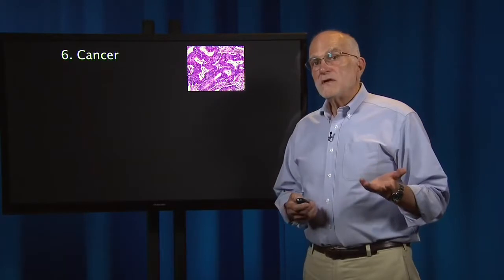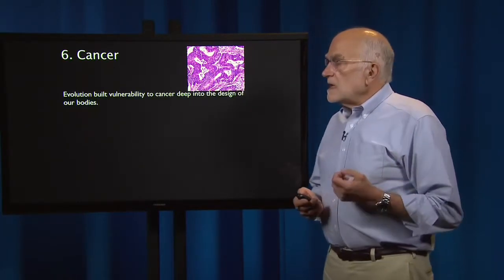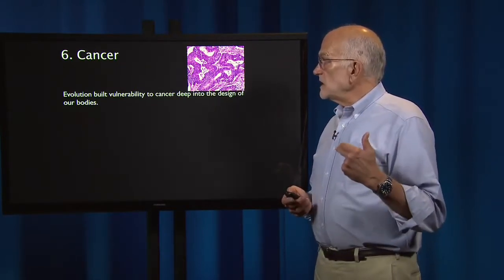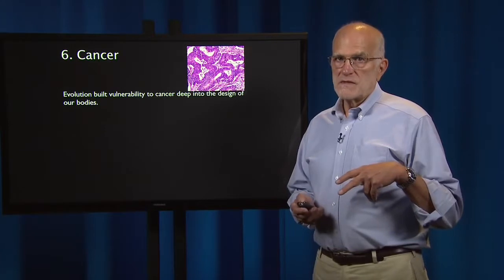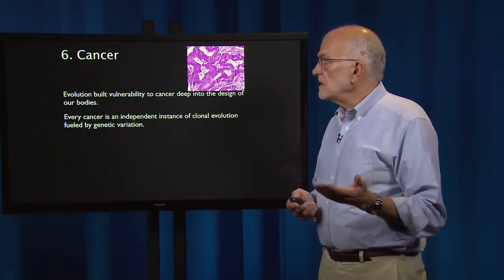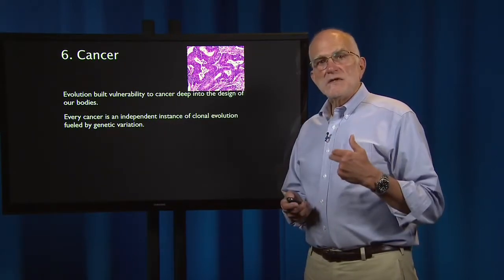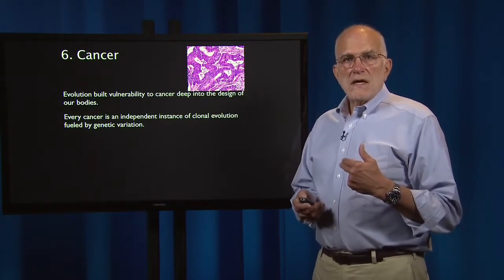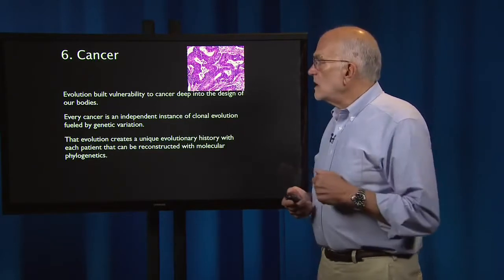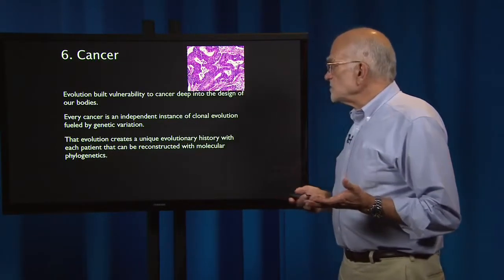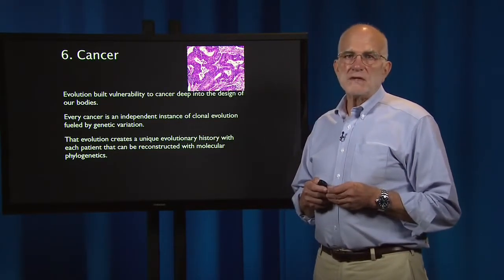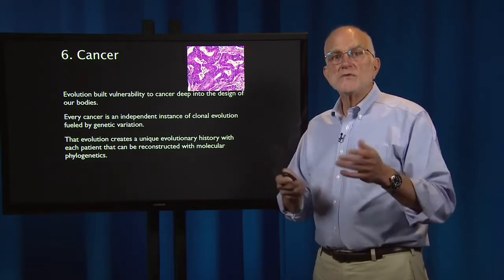Cancer is a very interesting part of evolutionary medicine, both because there is a historical component. Evolution built vulnerability to cancer deep into the design of our bodies, and it's going to be almost impossible to change that design and eliminate that vulnerability. Every cancer is an independent instance of clonal evolution, fueled by genetic variation. That evolution creates a unique evolutionary history with each patient, and can be reconstructed with molecular phylogenetics so that we can actually see the history of an individual cancer.